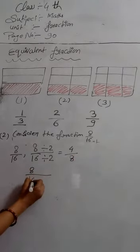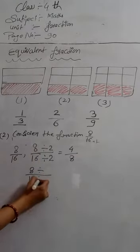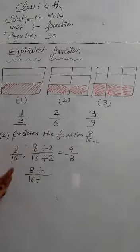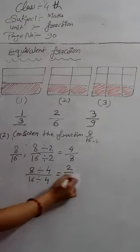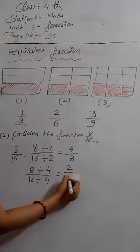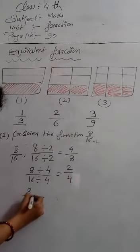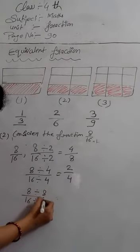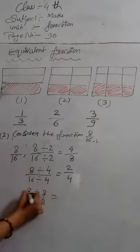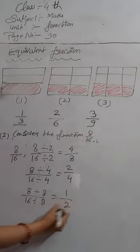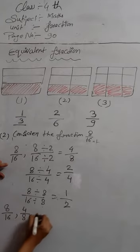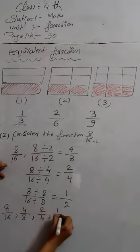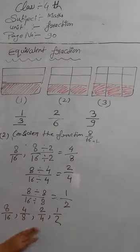Now we take eight by sixteen and divide by four — four twos are eight, four fours are sixteen — giving us two by four. Then, dividing eight by sixteen by eight — eight ones are eight, eight twos are sixteen — giving us one by two. So, the fractions obtained are eight by sixteen, four by eight, two by four, and one by two. These are equivalent fractions.